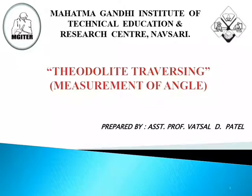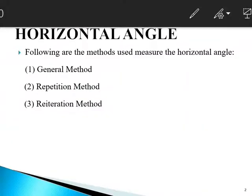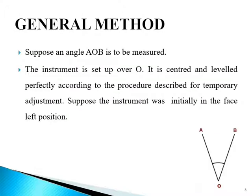So be ready with your pen and paper. First of all, we will start with the measurement of horizontal angle. The following methods are used to measure the horizontal angle: the first one is the general method, the second one is the repetition method, and the third one is the reiteration method. Let us understand all these methods one by one, starting with the general method.